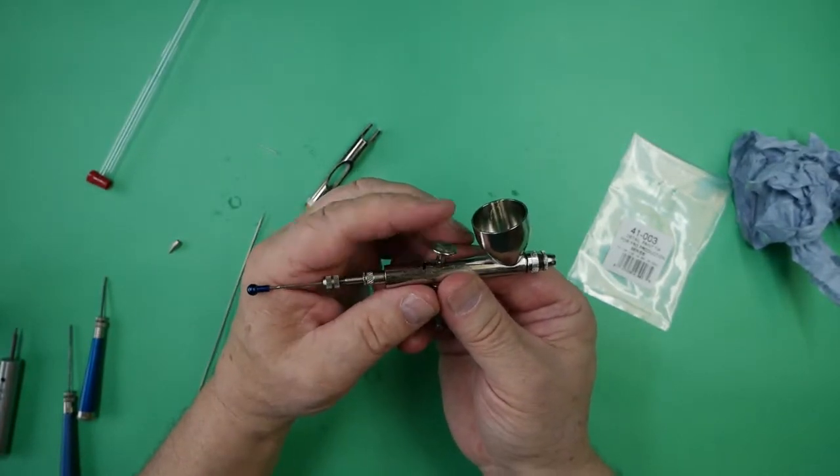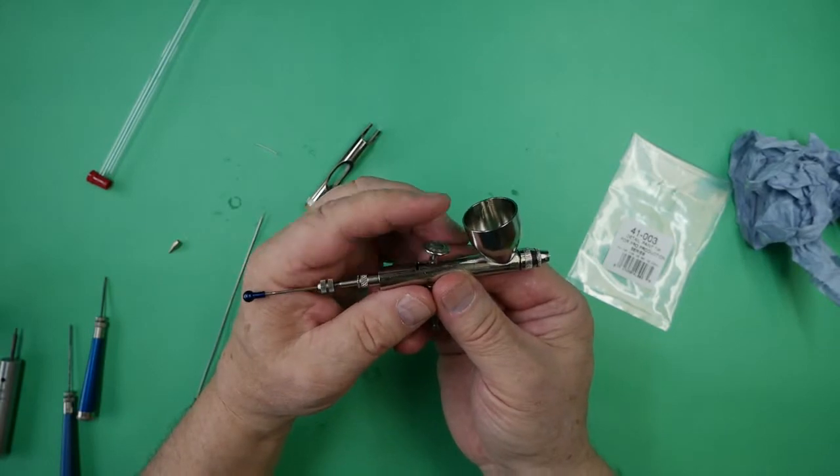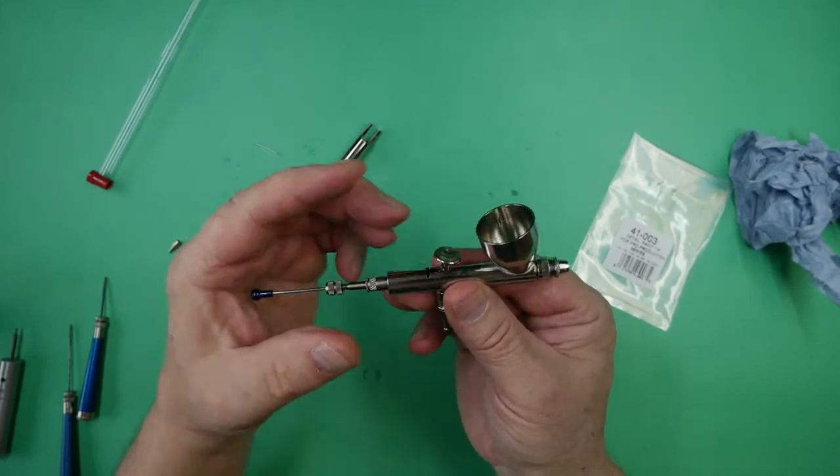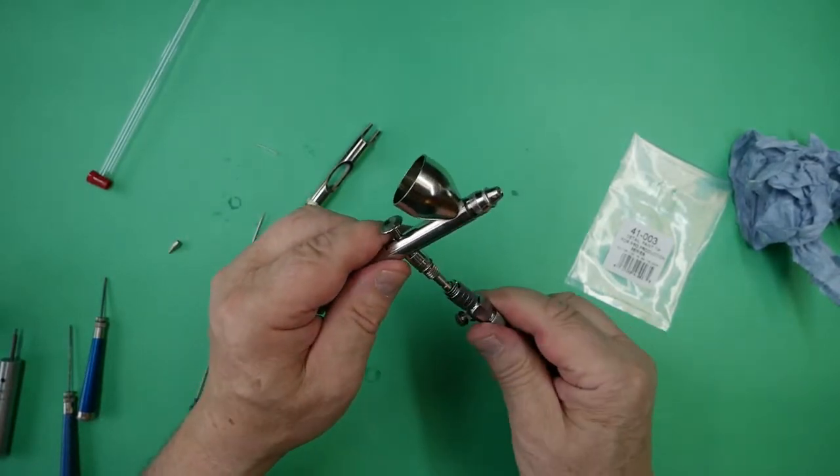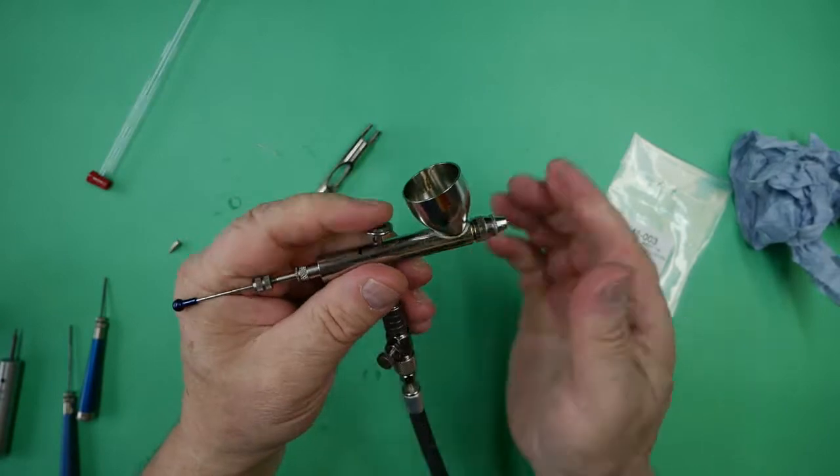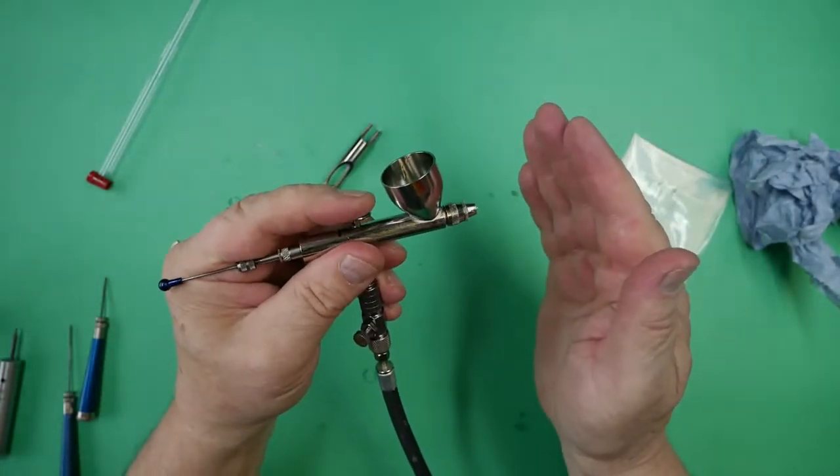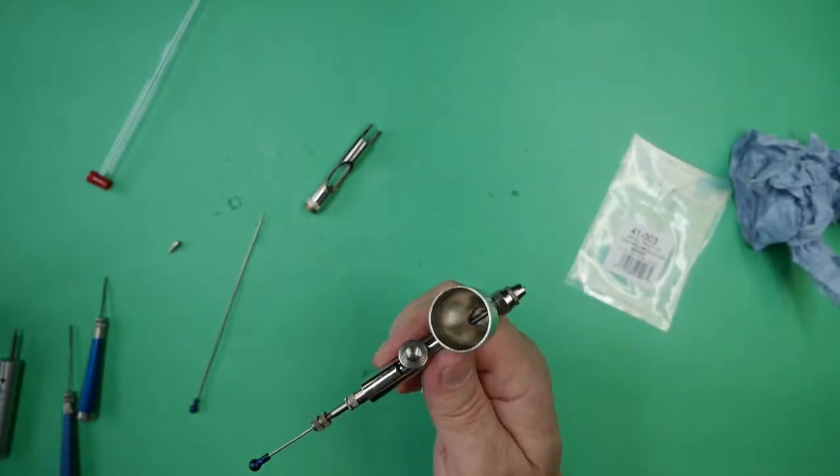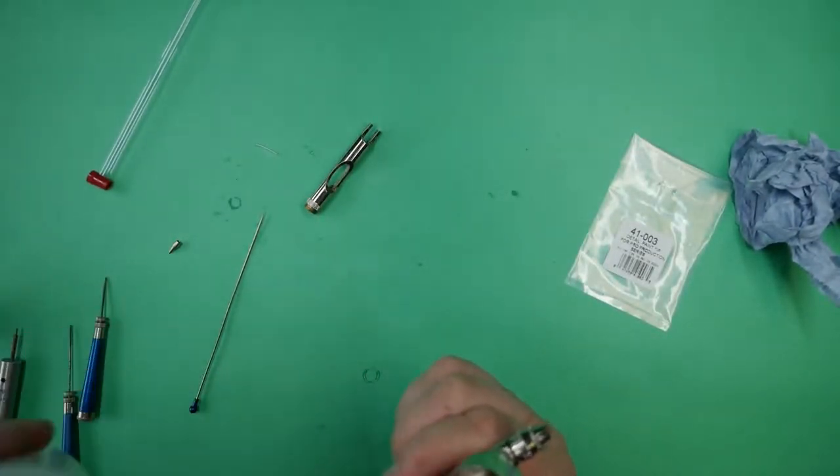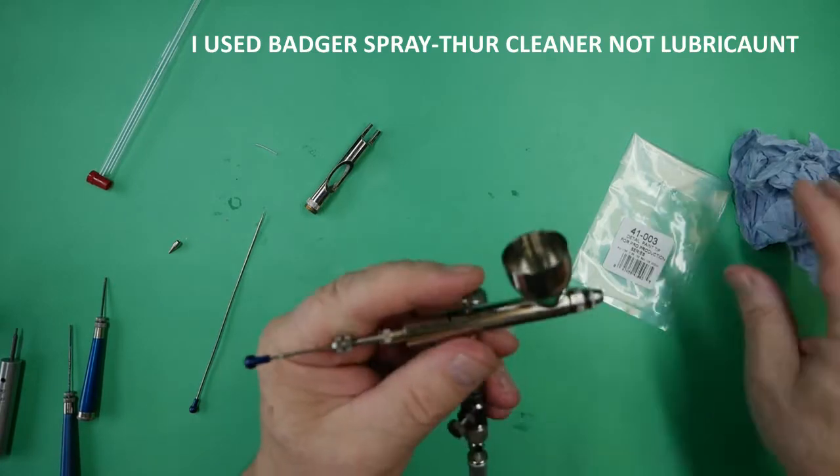We'll check all the action of the airbrush, which seems to be working fine. I'll connect the airline. Everything seems fine there. I'll put a bit of lubricant into it.